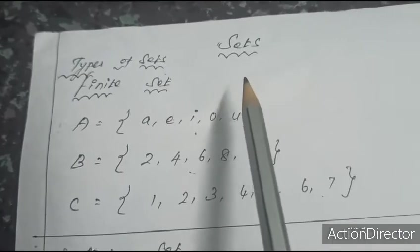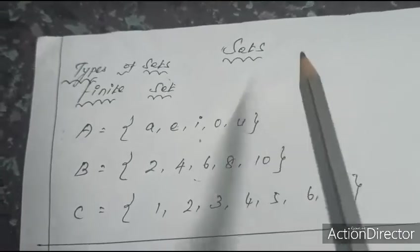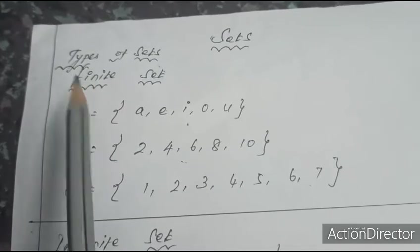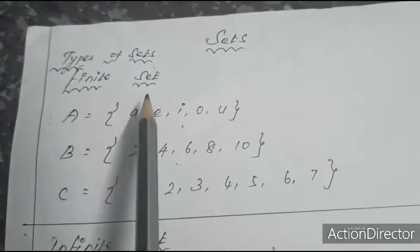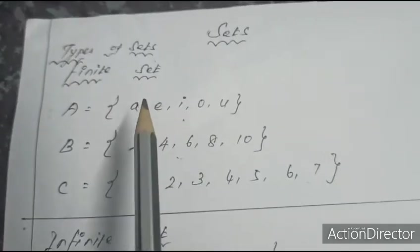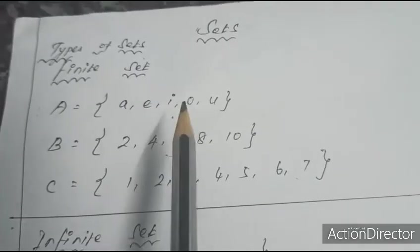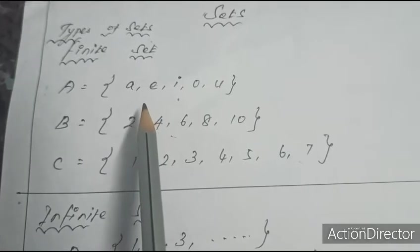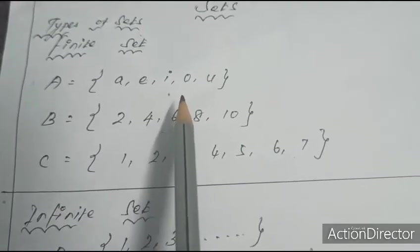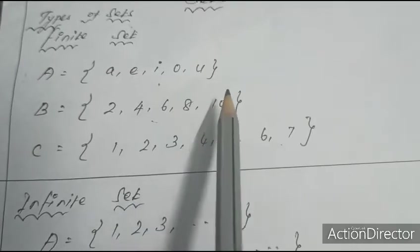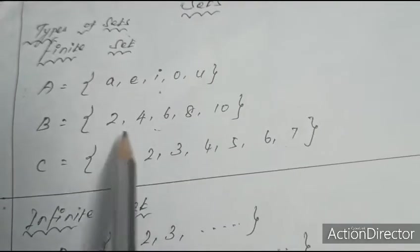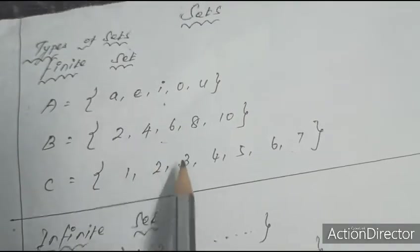Good morning students. Today let us continue the chapter Sets, first topic: Types of Sets. First is the finite set. Example: A = {a, e, i, o, u} — the set of vowels. It has a finite number of elements only, so it is a finite set.